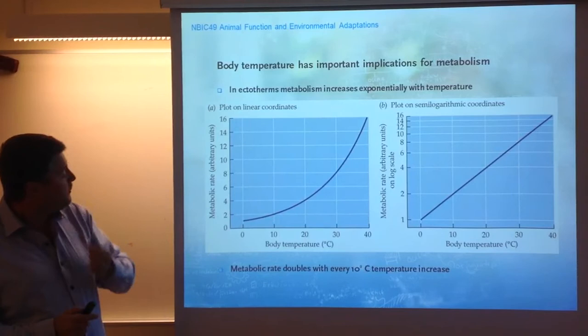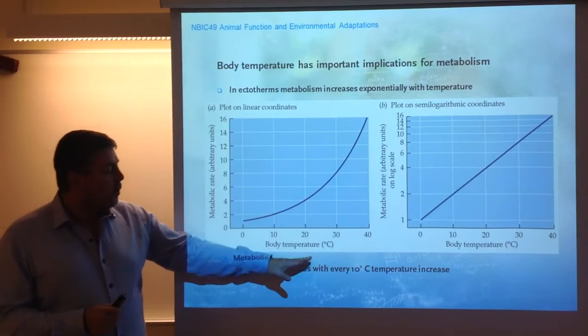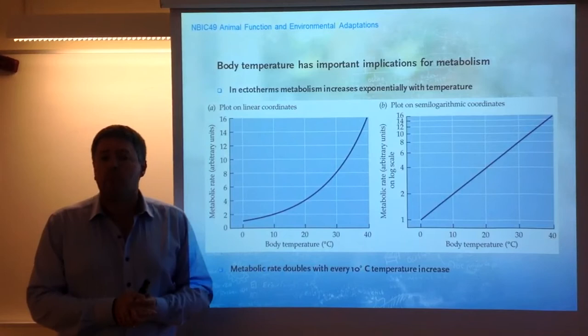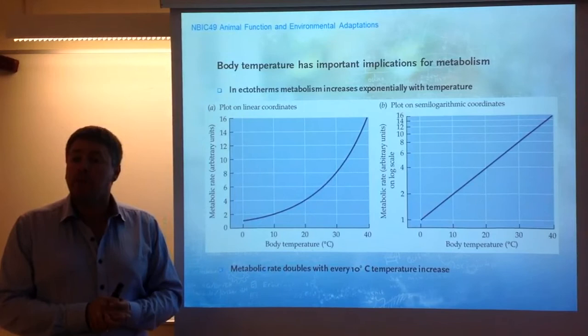We could say essentially that metabolic rate roughly doubles with every 10 degrees of temperature. Now you should also understand why it doubles. When we say that metabolic rate doubles every 10 degrees, we mean that the Q10 — the temperature coefficient we were discussing earlier — is 2, because it's a doubling factor.